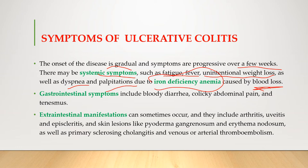The gastrointestinal symptoms include bloody diarrhea, colic abdominal pain, and tenesmus. Colic abdominal pain is a cramp-like pain originating in the small or large intestine. Tenesmus is a feeling that you need to pass stool even though your bowels are already empty, accompanied by pain and cramping.